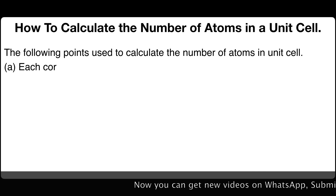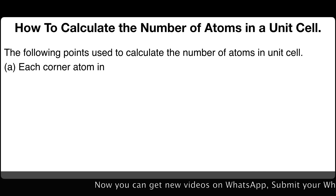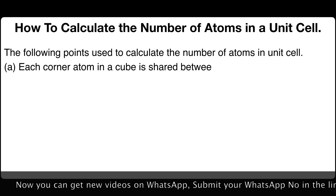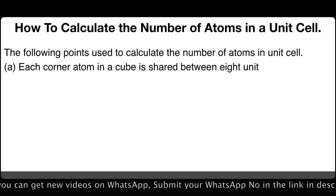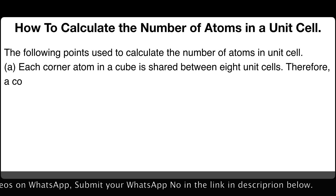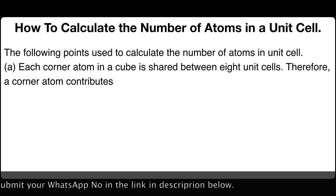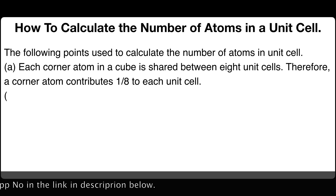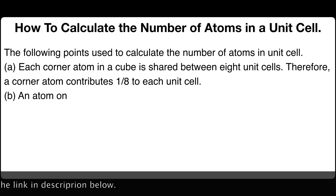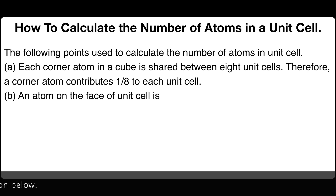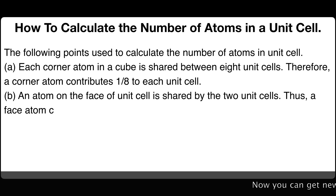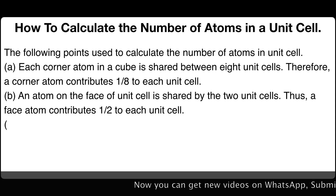First, each corner atom in a cube is shared between eight unit cells. Therefore, a corner atom contributes one-eighth to each unit cell. Second, an atom on the face of the unit cell is shared by two unit cells. Thus, a face atom contributes one-half to each unit cell.